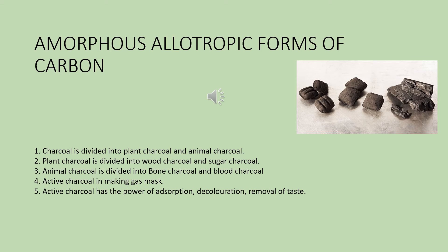Now, animal charcoal. The first division is bone charcoal. In a closed retort, when an animal's bone undergoes destructive distillation, the black residue remaining after the volatile substances go off is called bone black. It contains 10% carbon and the rest is calcium phosphate (Ca₃(PO₄)₂) and calcium carbonate (CaCO₃). On adding hydrochloric acid, the calcium salt is dissolved and the black carbon that remains is called ivory black.